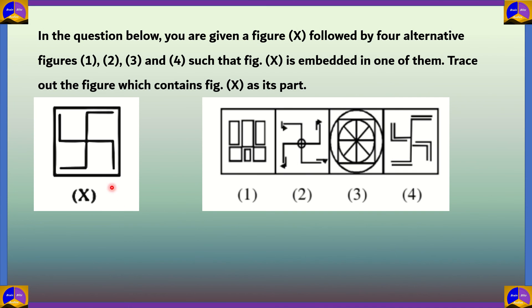Next question. In the question below, you are given a figure X followed by four alternative figures 1, 2, 3, and 4, such that figure X is embedded in one of them. Trace out the figure which contains figure X as its part.